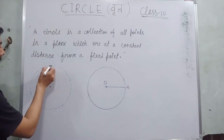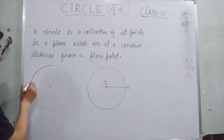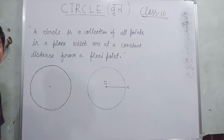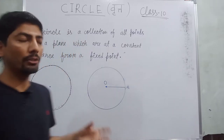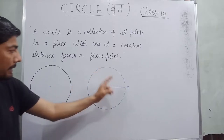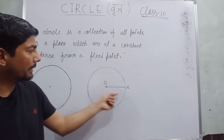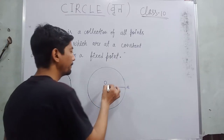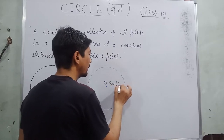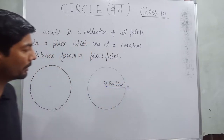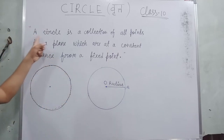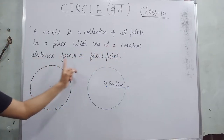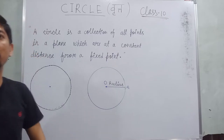Bahut saare points kisii ek nishit dhuri se ek point se agar collect kar liya jaye — yaani ki jude hue hon, connected hon — toh unhein hum circle kehte hain. Agar hum in points ko collect karein like this, toh yeh ek circle banayenge. Toh yeh humari circle hai, yeh circle ka center hai, aur circle ke kisi ek point A se jo distance li gayi hai use bolenge radius. So the definition: a circle is a collection of all points in a plane which are at a constant distance from a fixed point.